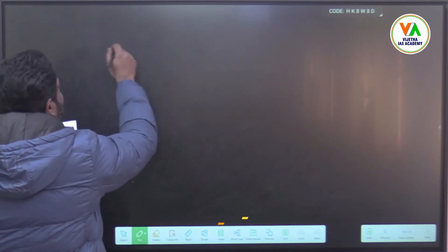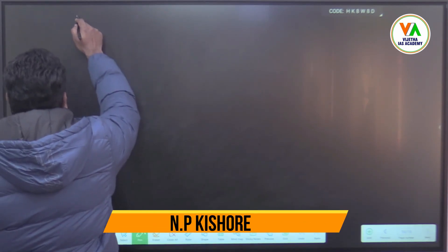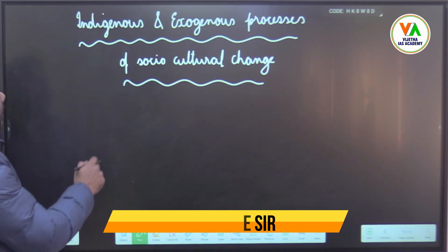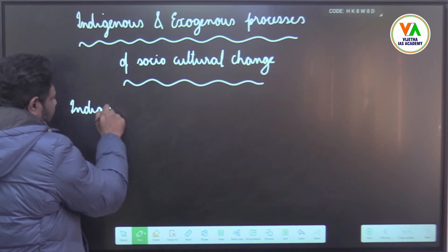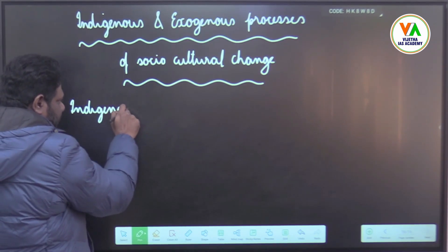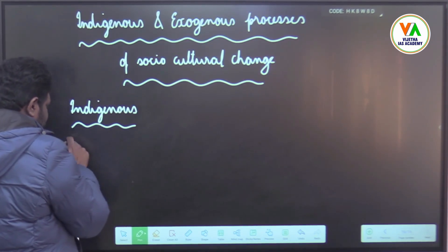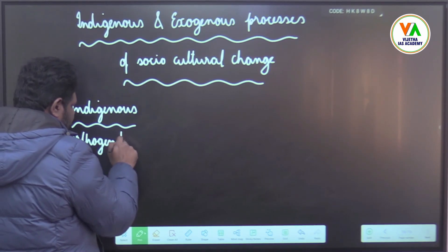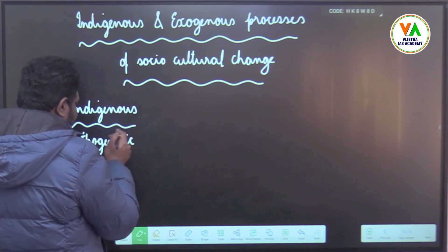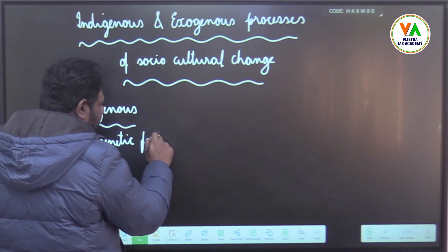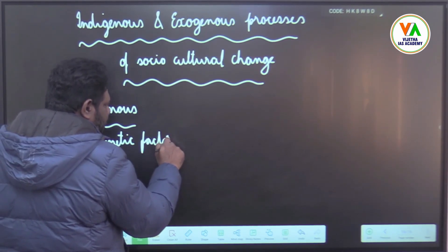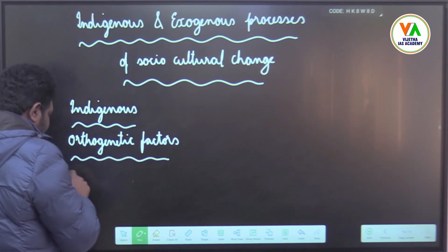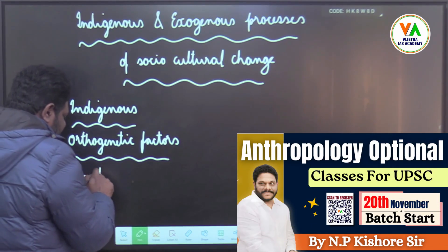Indigenous and exogenous processes of socio-cultural change. Indigenous processes are those which are otherwise known as orthogenetic processes, or the factors responsible for them are orthogenetic factors. These are factors which emanate from within a society.